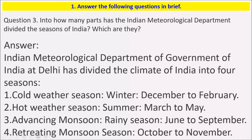Next: into how many parts has the Indian Meteorological Department divided the seasons of India? The Indian Meteorological Department of the Government of India at Delhi has divided the climate of India into four seasons: cold weather season or winter, that is December to February; hot weather season or summer, that is March to May; advancing monsoon or rainy season, that is June to September; and retreating monsoon season, that is October to November.